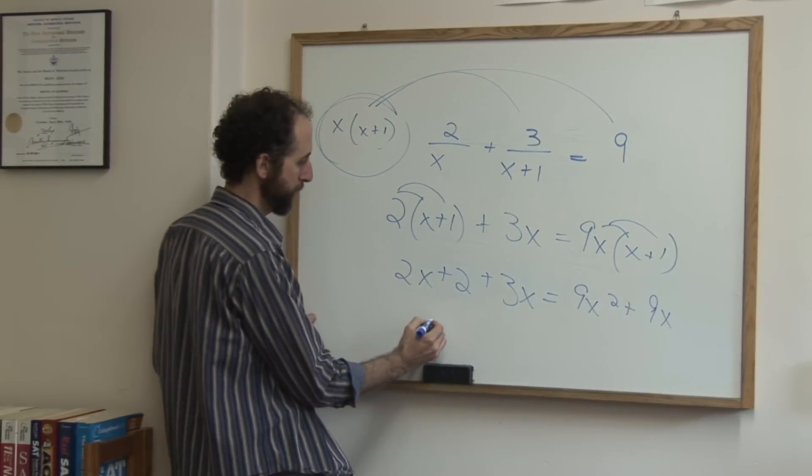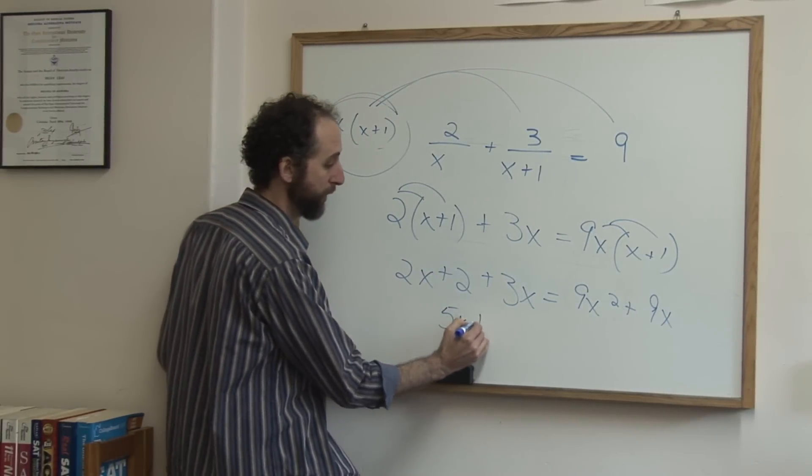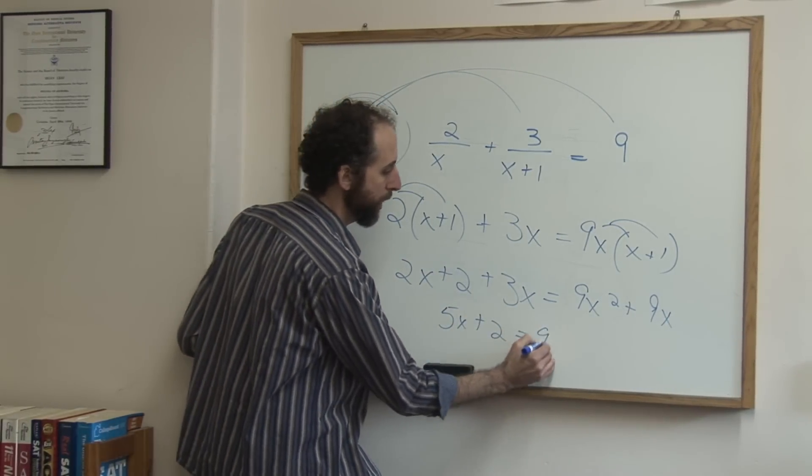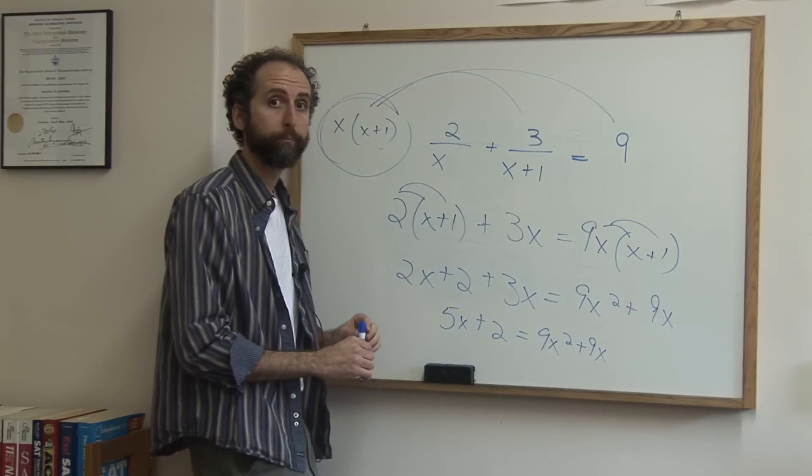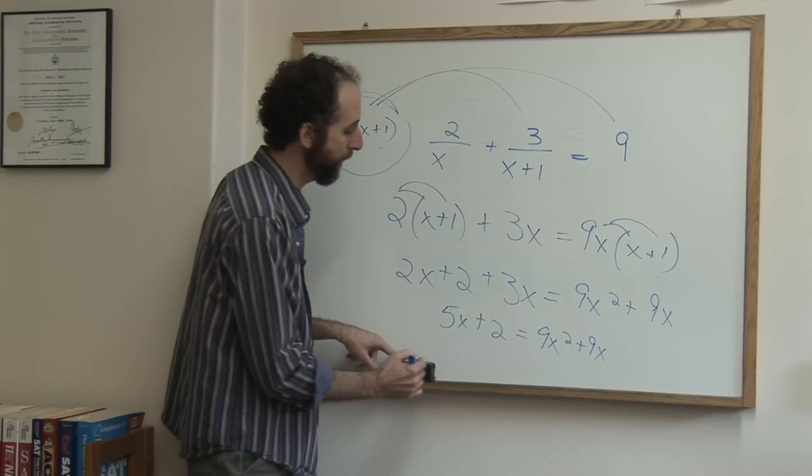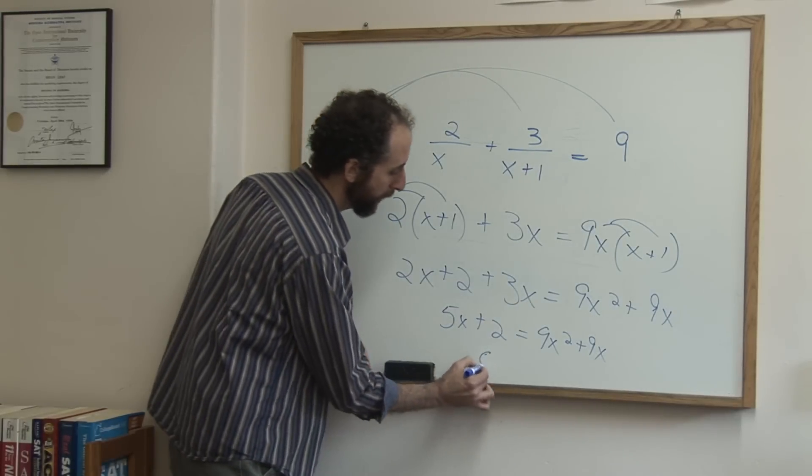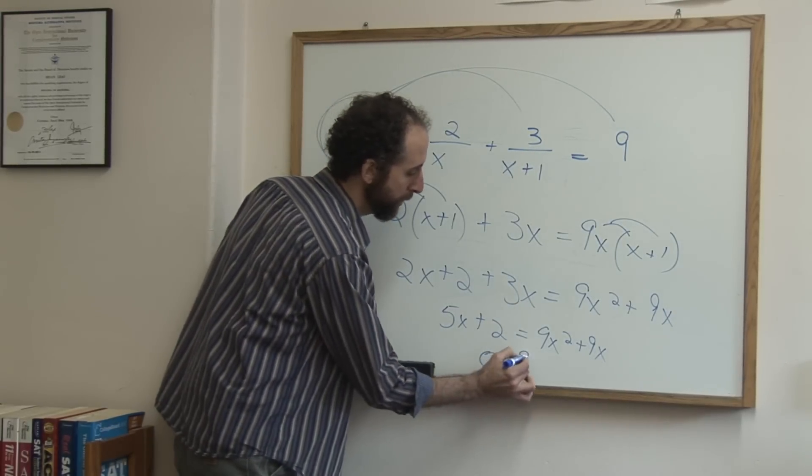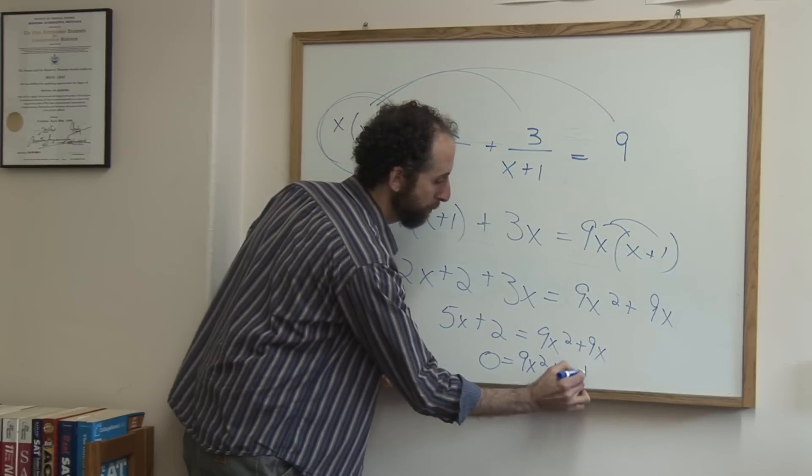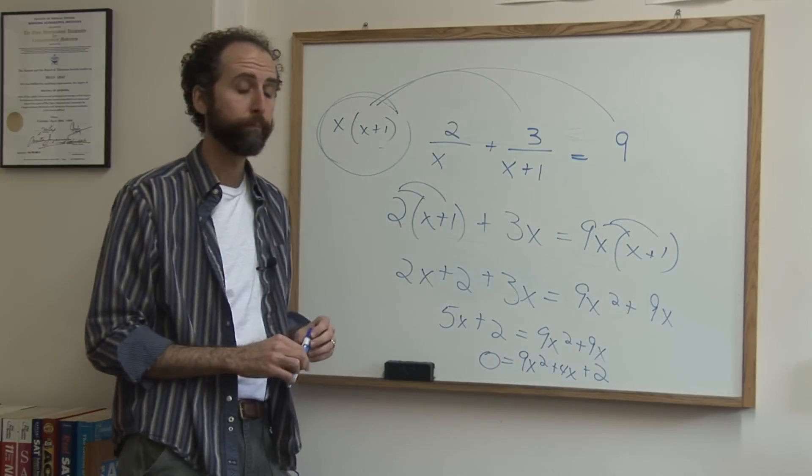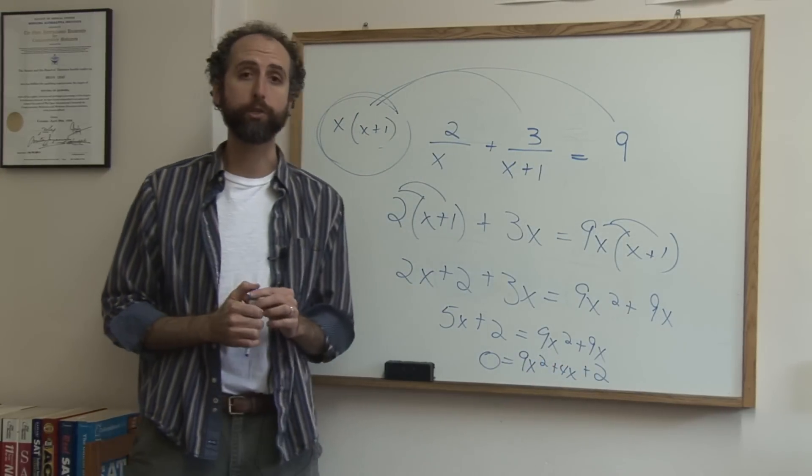Collect like terms, we have 5x plus 2 equals 9x squared plus 9x. Keep collecting like terms. We're going to subtract 5x from both sides and 2, giving me 0 equals 9x squared plus 4x plus 2, and then we'll use the quadratic equation to solve that one.